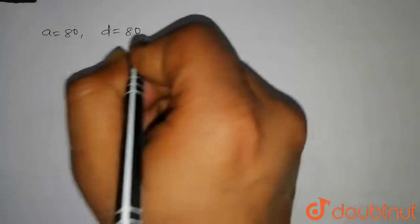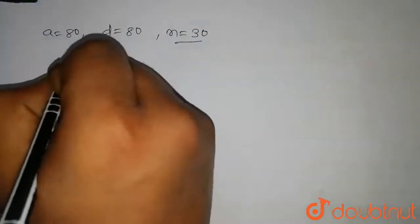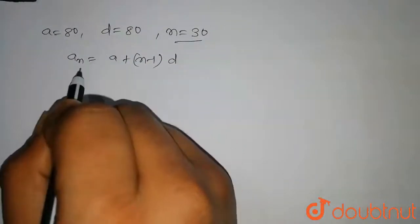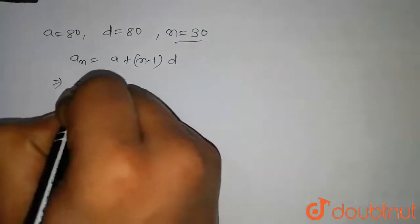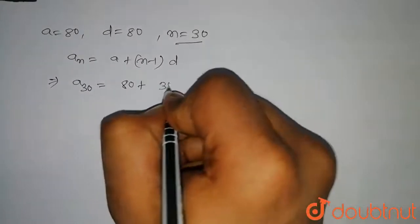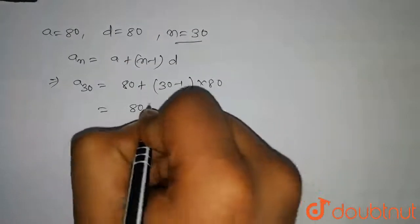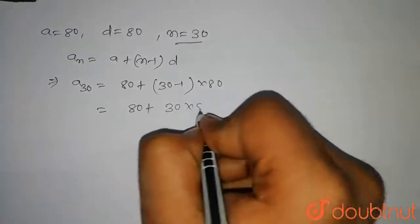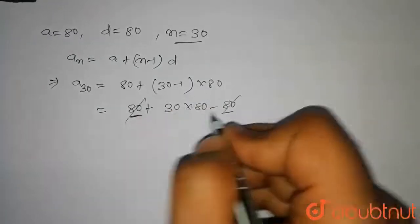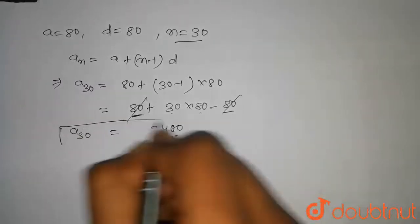So we have a equal to 80, d equal to 80, and n equal to 30. Now we know that the nth term of an AP is equal to a plus n minus 1 into d. On putting this value in this formula, we get a30 equal to 80 plus 30 minus 1 into 80. So a30 will be equal to 80 plus 30 into 80 minus 80. The 80 and minus 80 will cancel, and we get 30 into 80, which is 2400.